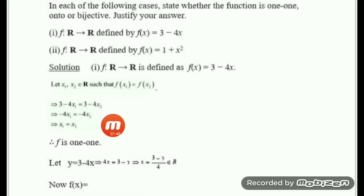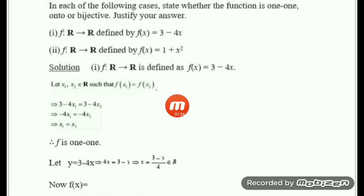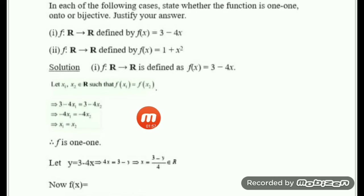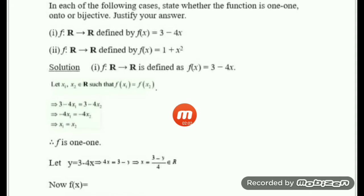Since we started with f(x1) = f(x2) and arrived at x1 = x2, the conclusion is that the function is one-to-one. Now after showing the function is one-to-one, we have to show it is onto. I hope you remember the definition of onto.